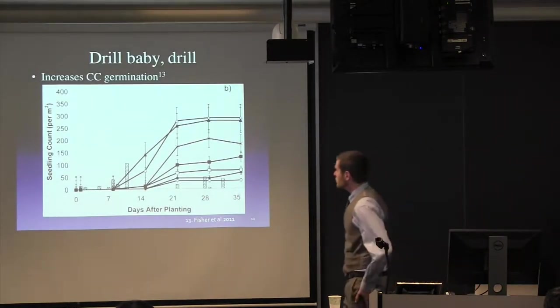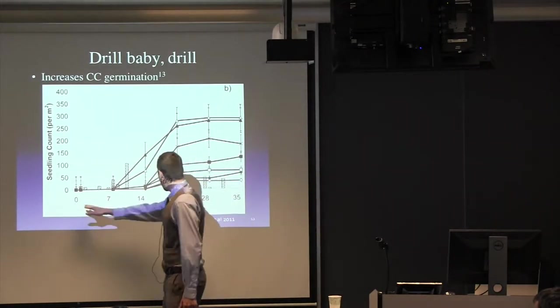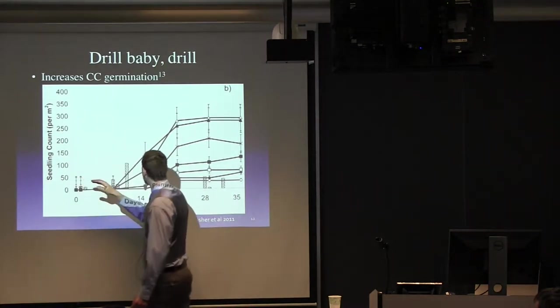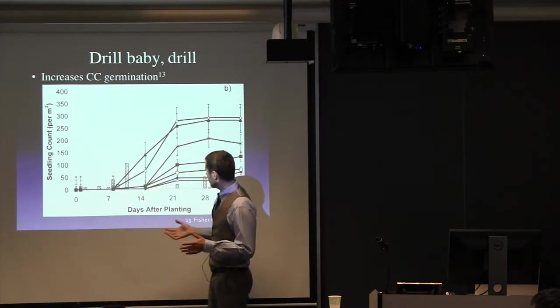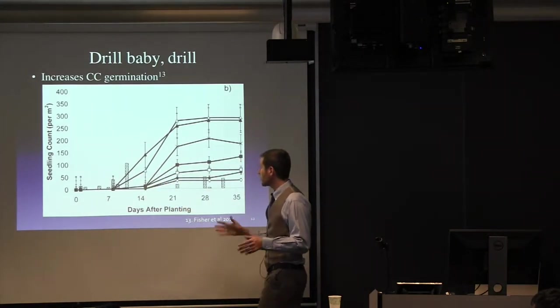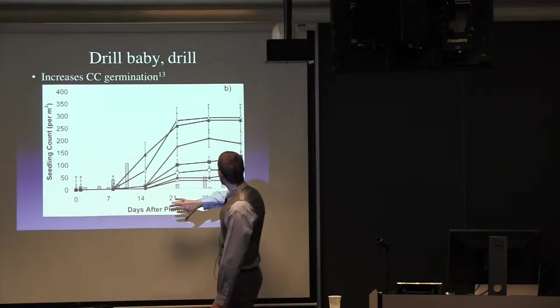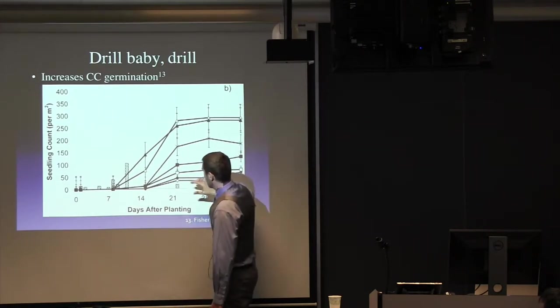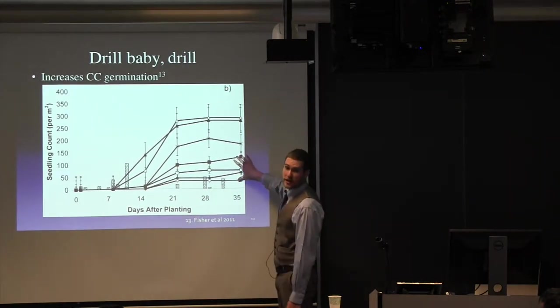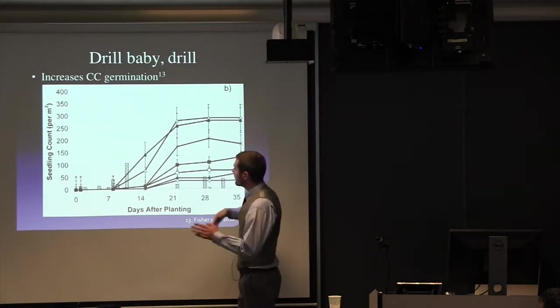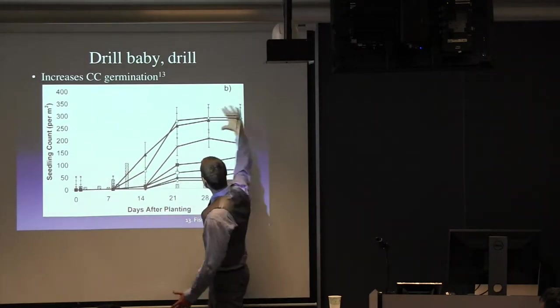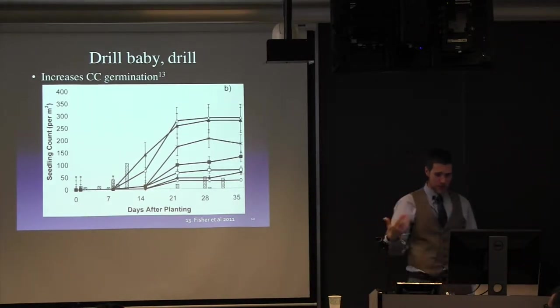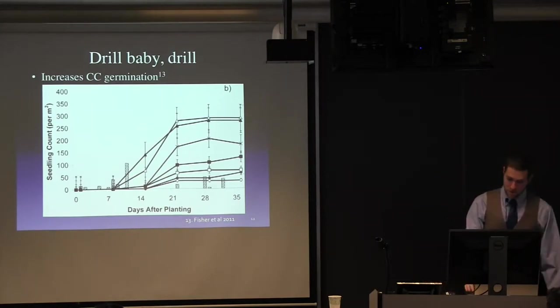And as an example, I really like this chart. So we have days after planting your cover crop on the x-axis, seedling count per meter squared on the y-axis. And this was, they were looking at cereal grains as cover crops. So what I want you to focus on, these triangles, these are cover crops that have been drill interseeded. These guys were just broadcast. And this middle one was broadcast and then disked. But really, they found a significant increase in your seedling count when you drill interseed. So this is really something that would be good for more farmers to implement.